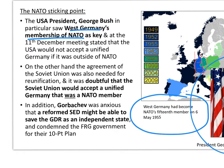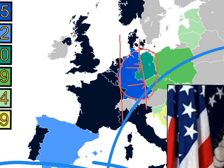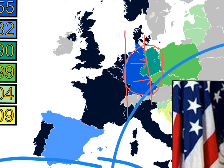On the other hand, the agreement of the Soviet Union was also needed for reunification, and it was very doubtful that the Soviet Union would accept a unified Germany that was a NATO member. If a reunified Germany were part of NATO, the front line in the Cold War would effectively move further to the east, which would be threatening to the Soviet Union.